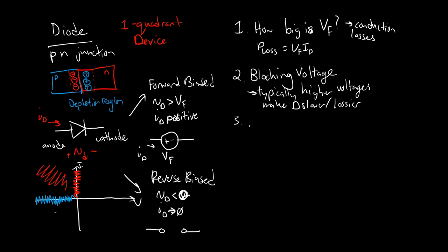Another thing we're interested in is how much current the diode can conduct. If you want to conduct 1,000 amps through a diode, that diode is going to be pretty big to carry that current. A tiny diode trying to conduct 1,000 amps would just burn up. So how much current it conducts affects the physical construction of the diode itself.